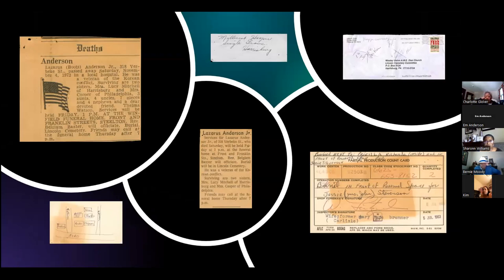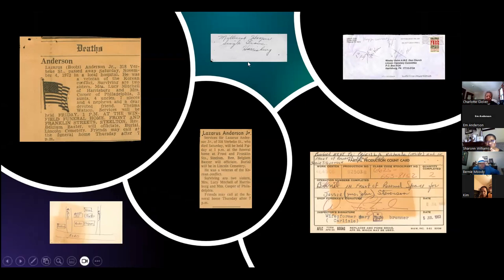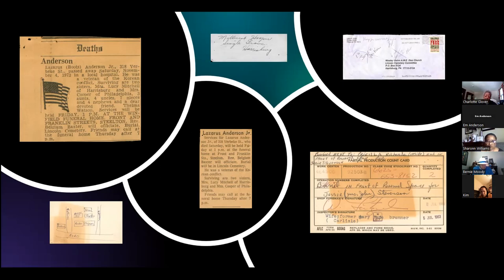These are some of the other kinds of documents that you may find in a folder you're working with. You can see that some of them will not give you the information you need in creating your memorial page, such as this envelope, which was used to send a check to cover burial costs, or the note from the undertaker. Down here is what's called a partial production count card — it has some kind of information on it and would bear reading, because that's the only way you're going to know if it contains information you can use. In the corner is a hand-drawn cemetery map, which may be helpful. If after reading a document you find it does not contain information you can record, just leave it in your folder.